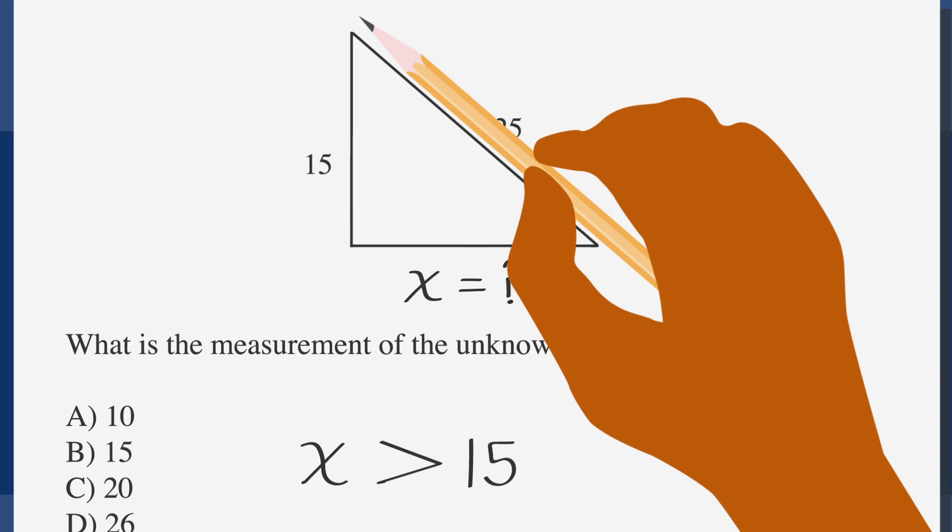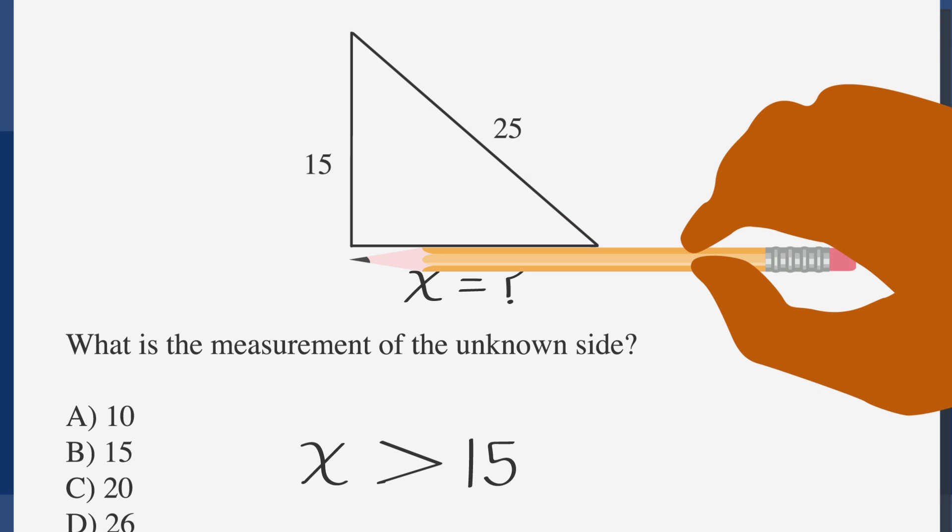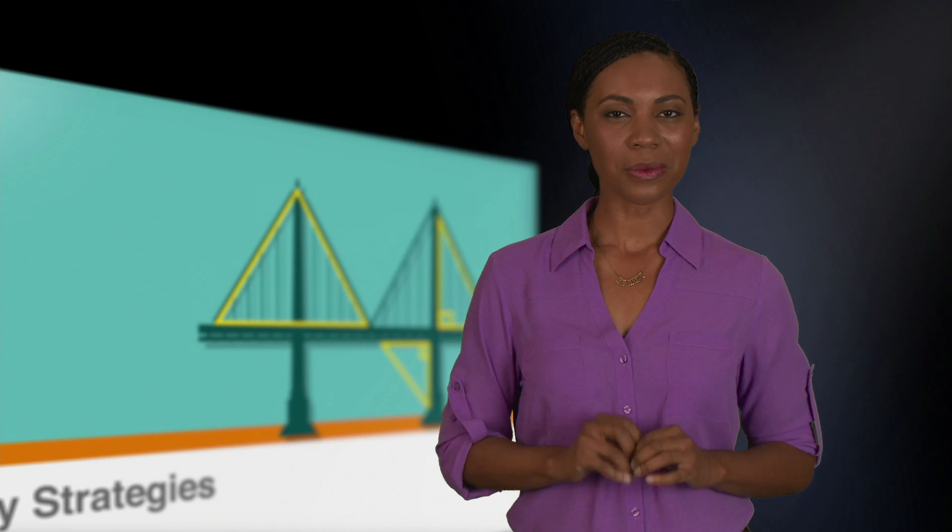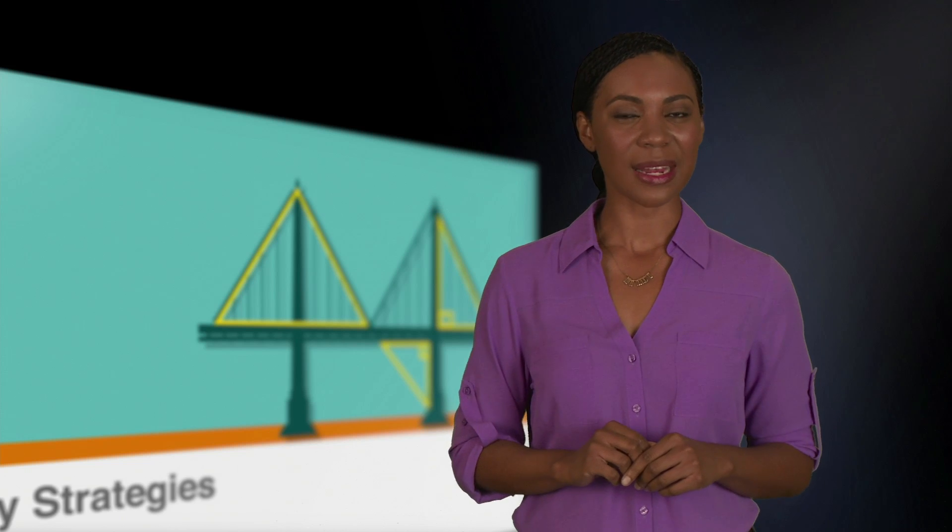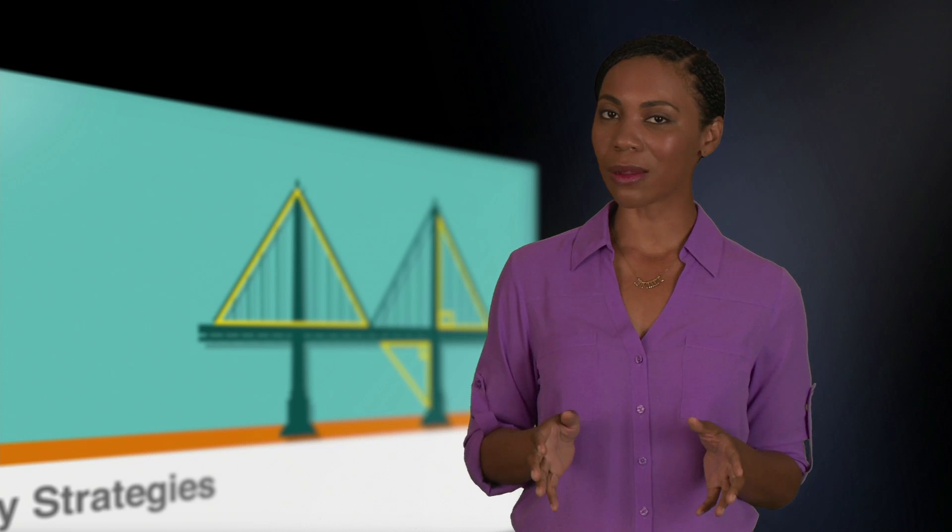Now, measure the side that's labeled as 25 in just the same way. Again, compare this measurement with the unknown side. The side is actually shorter than the side of 25 that we just measured. So, even though we don't know exactly what the third side is, we do know that it's greater than 15 but smaller than 25.